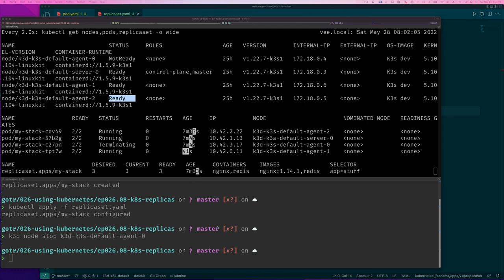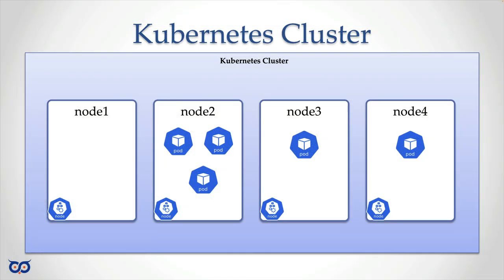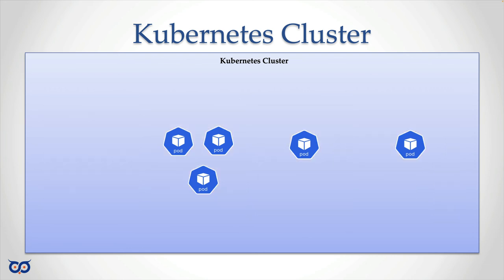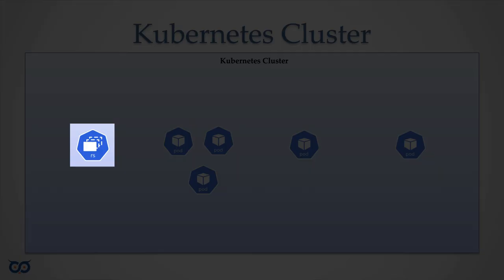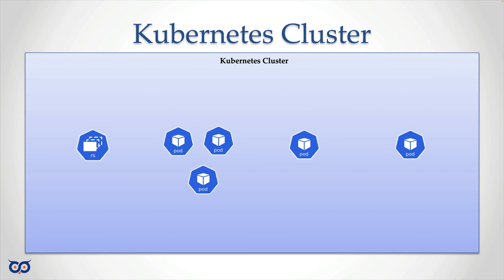Going forward, instead of drawing a full Kubernetes cluster with all the nodes, I'll simplify the diagrams — there's a lot to draw. I might just show pods running in a cluster. When I talk about a replica set I'll use a replica set icon, and when you see that icon you know it's managing a set of pods. If I need to show which replica set manages which pods I'll add lines between them, but otherwise the icon is enough. The pods must be running on some node somewhere and we don't need to depict specific nodes unless there's a good reason.